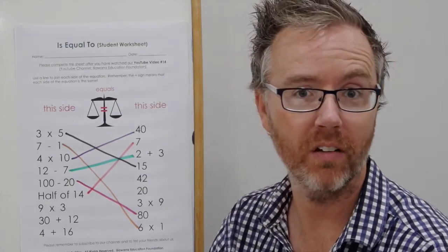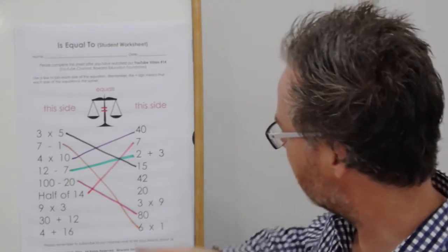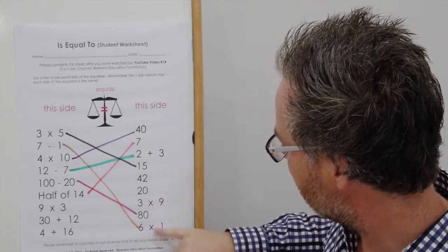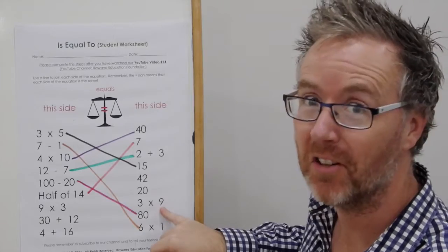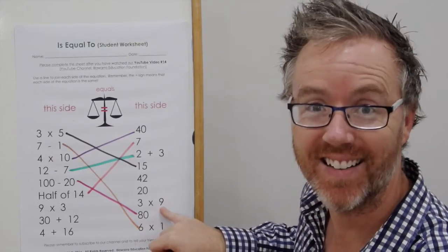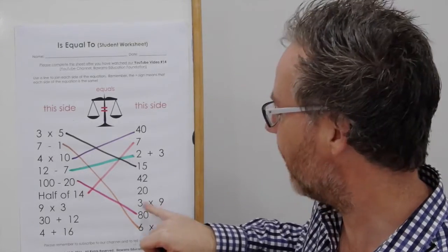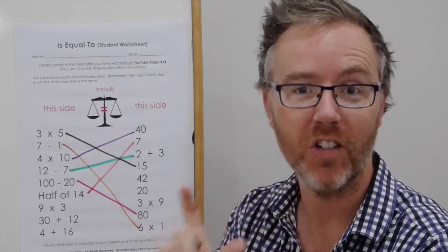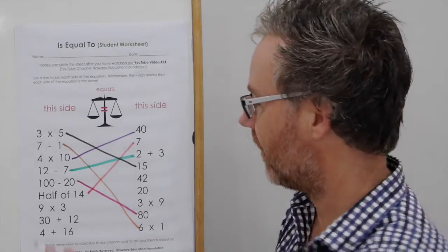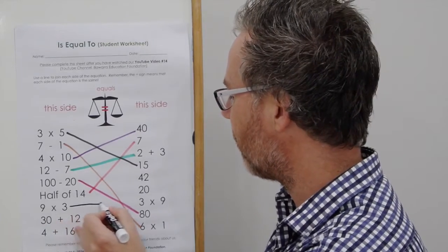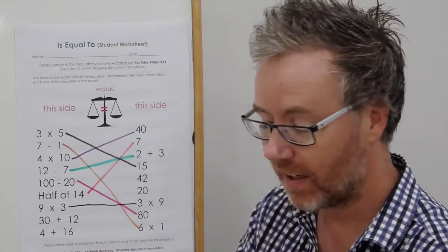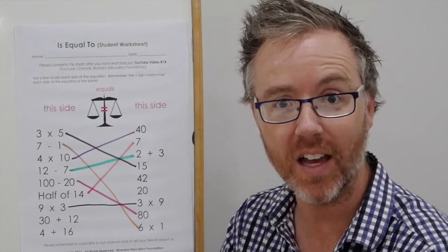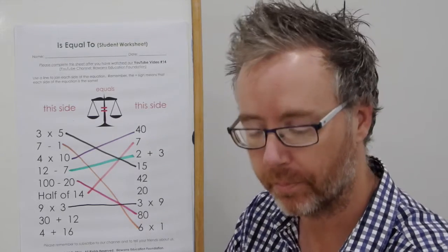9 times 3. 9 times 3 is 27. And, I haven't written 27. I've actually done another algorithm. 3 times 9. Of course, multiplication. If you change them around, it's the same answer. 9 times 3 is equal to, is balanced with, is the same as 3 times 9. 2 more.